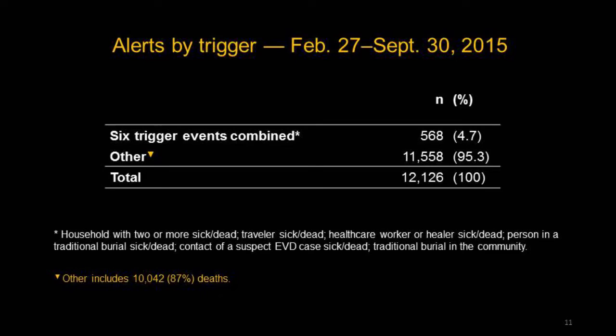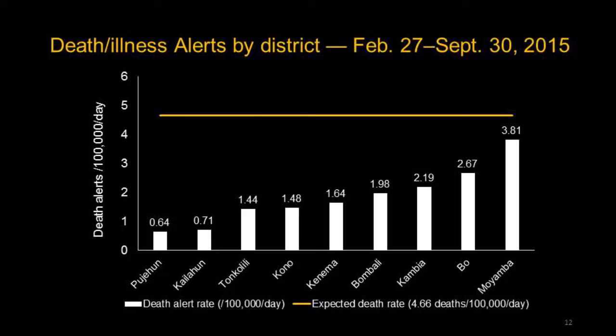When we looked at the breakdown of alerts, only 5% were classified as one of the six predefined trigger events. The remaining 95% fell into an 'other' category, of which 87% related to deaths occurring in the community that may or may not have been related to Ebola. However, the death reporting rates by district — shown by the white bars — were considerably lower than the anticipated crude death rate of 4.66 deaths per 100,000 per day, shown by the yellow line. So it was not exactly mortality surveillance, but it did show a continual flow of death reporting.